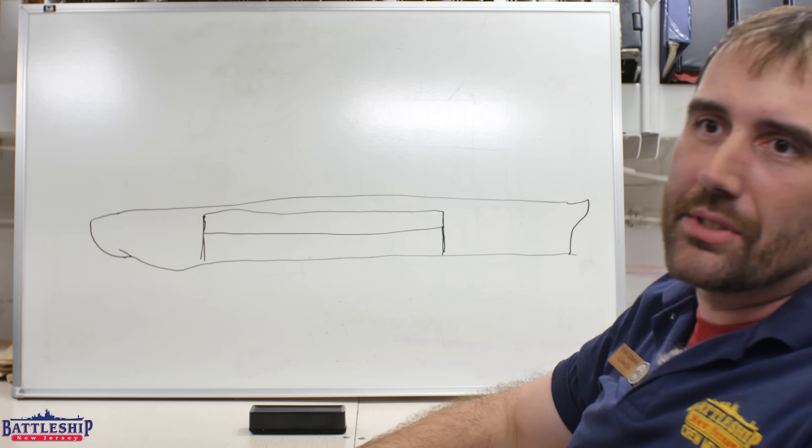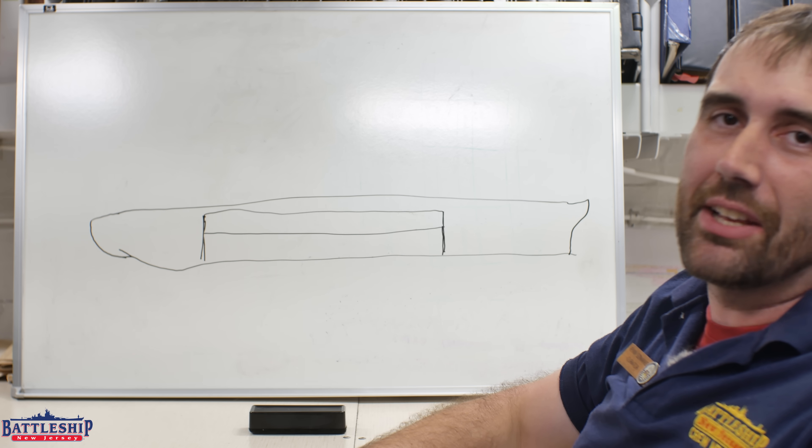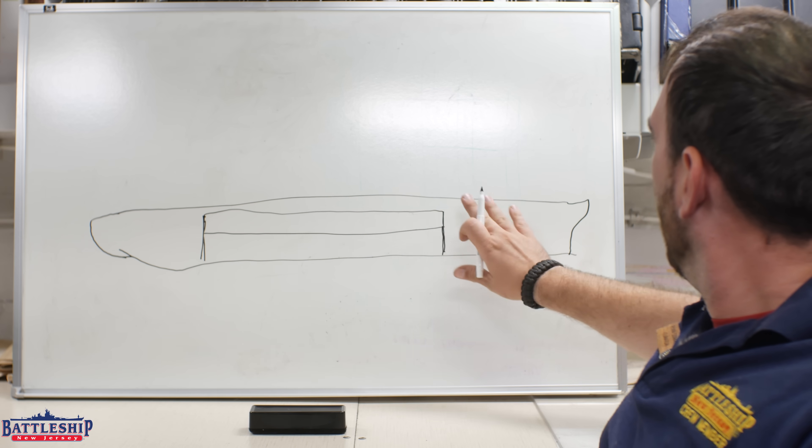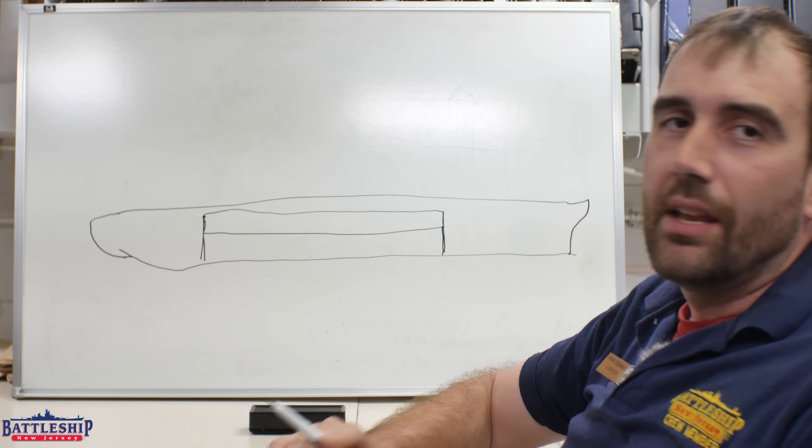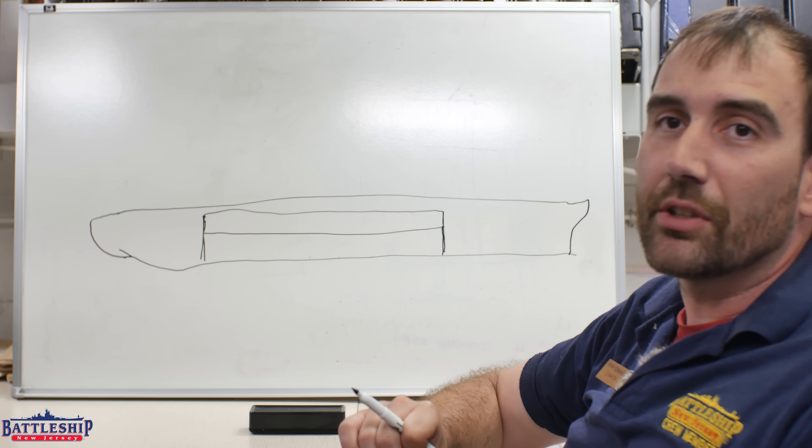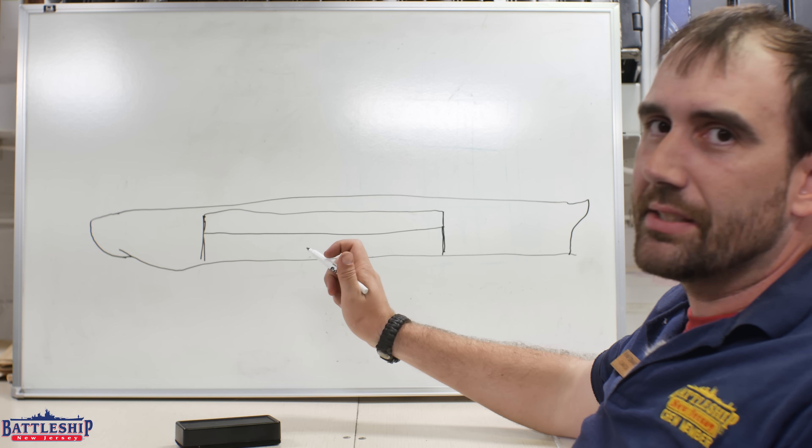In addition to the armored box, the Navy puts a bow and stern on the ship, where the ship starts to get pointy, just for hydrodynamic efficiency, essentially. Remember, these parts of the ship are more or less completely unarmored. The problem is, some critical parts of the ship are outside of the citadel.